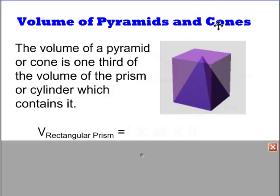You can see that in the picture off to the right, we have a square-based prism. Within that square-based prism is a pyramid that is exactly the same height and has the same base shape.